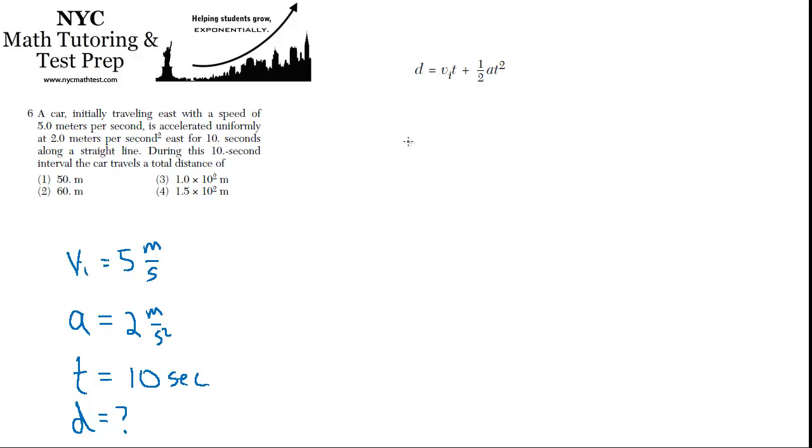So in this case, we want the distance, so we've got to plug them in. So the initial velocity was 5 meters per second, and I'll write the units in. You don't always have to do this, but it's good practice seeing the units cancel out, and I want to show you that. So the time was 10 seconds,